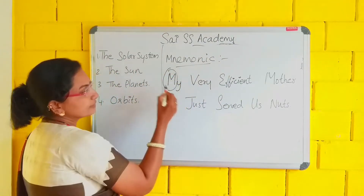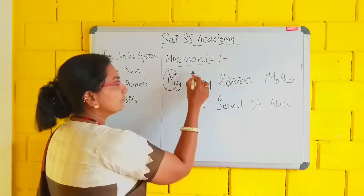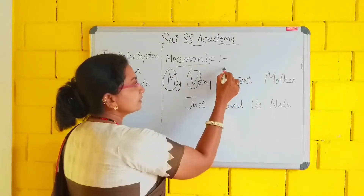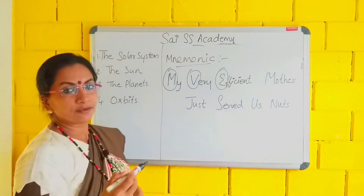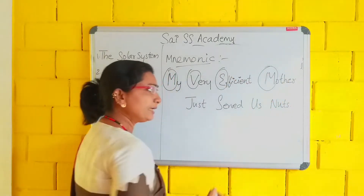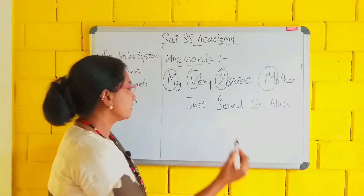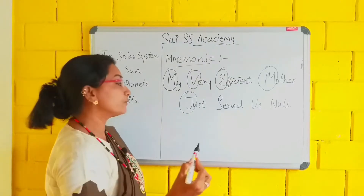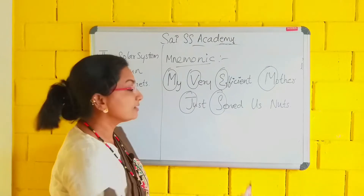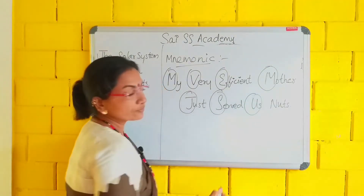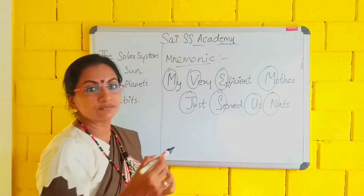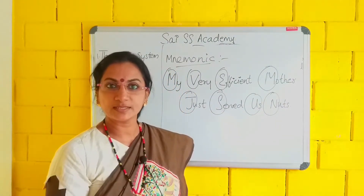My very efficient mother just served us nuts. M is for Mercury. V — 'very' — V is for Venus. E — 'efficient' — E is for Earth. The next M — 'mother' — M is for Mars. J — 'just' — J is for Jupiter. S — 'served' — S is for Saturn. U — 'us' — U is for Uranus. And N — 'nuts' — N is for Neptune. So it's very easy.